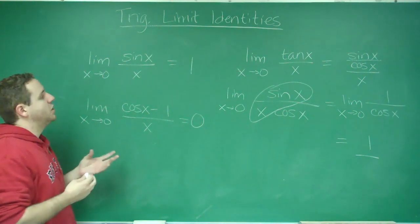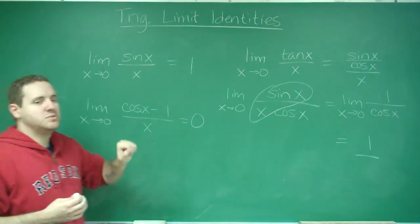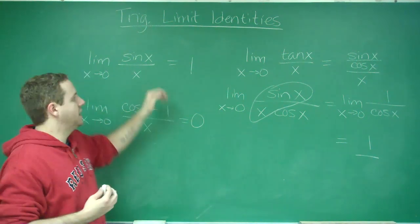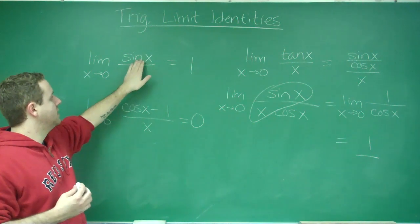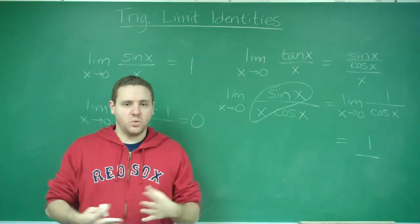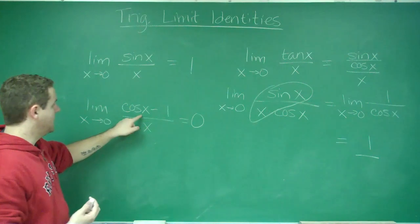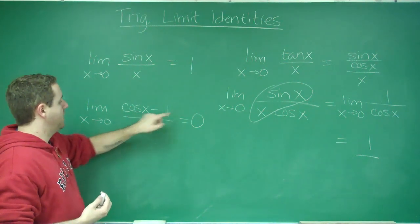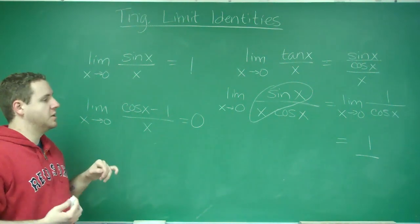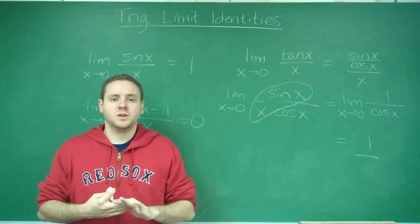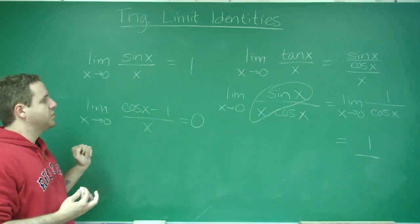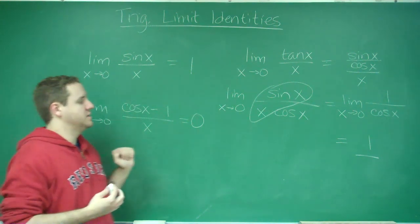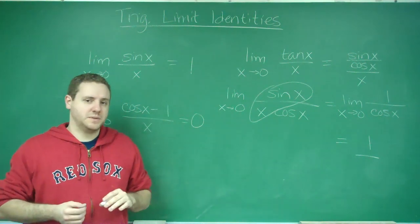Now, you should notice that none of these you can really use direct substitution on because you get indeterminate forms. Like, sine 0 over 0 is 0 over 0. That doesn't quite work. Here, cosine of 0 is 1. 1 minus 1 is 0 over 0. We get indeterminate forms. So, you're not usually going to have to prove these things, but just knowing these is going to be very helpful for your exam materials.